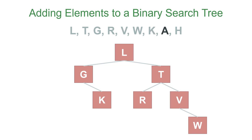A is the first letter of the alphabet, so it'll be as far to the left as we can go because there's nothing that comes before it. And then finally H, since it comes before L, but after G, but before K, so it'll be in L's left subtree, G's right subtree, and K's left subtree because again it comes before K.